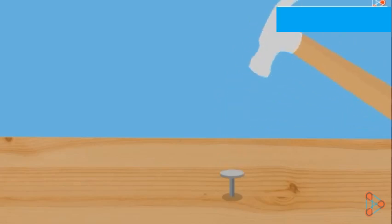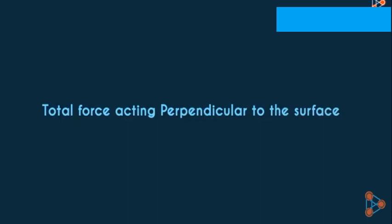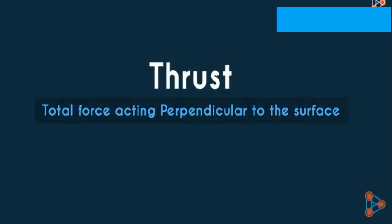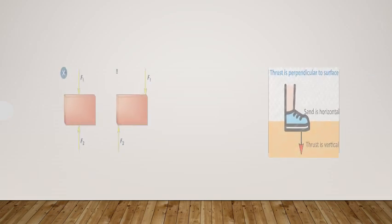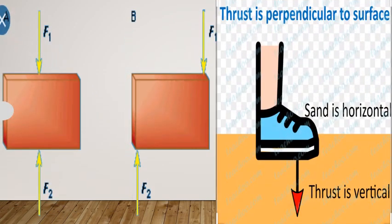A force can be applied on a surface in any direction. But if the force is acting normally on a surface, then such force is called thrust. We can say that thrust is a force — the only difference is that thrust is the force which is perpendicular to any surface.